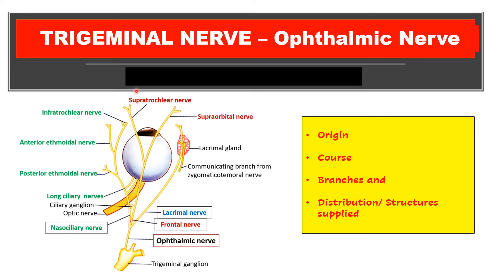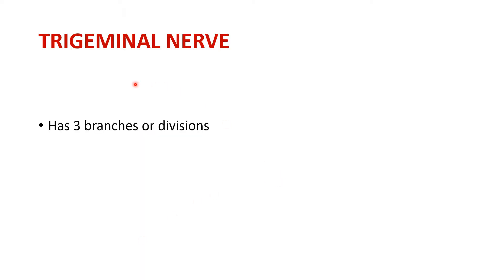This is the third video on the trigeminal nerve, and in this video I will consider the ophthalmic nerve — its origin, course, branches, and distribution, or structures supplied. The trigeminal nerve has three branches or divisions, and the first is the ophthalmic, which we will consider in this video.